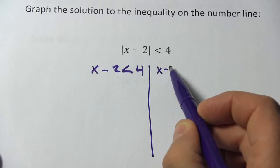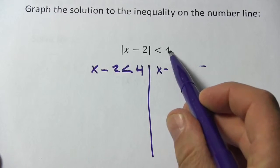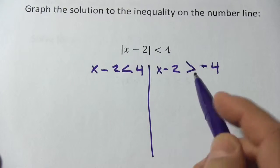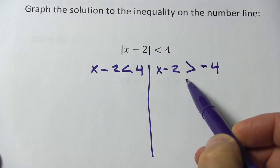The second one, we take away the absolute value brackets. You make this side negative, and you flip the sign. So that's the little extra step. You have to flip the sign.